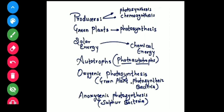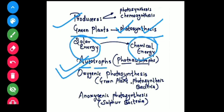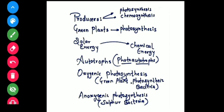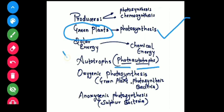Green plants have chlorophyll pigment which helps them to photosynthesize. 'Photo' means light and 'synthesis' means preparation, so they prepare food with the help of light or radiant energy. They convert solar energy into chemical form of energy. Their mode of nutrition is autotrophic — 'auto' means self and 'trophic' means feeder — so they are self-nourishing. They are also called photo-autotrophs.